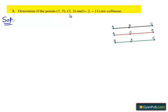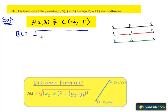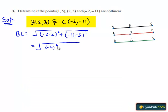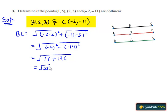Let us consider the next two points B(2,3) and C(-2,-11). By the distance formula, BC = √[(−2−2)² + (−11−3)²] = √[(−4)² + (−14)²] = √[16 + 196] = √212. Hence, the distance BC = √212 units.